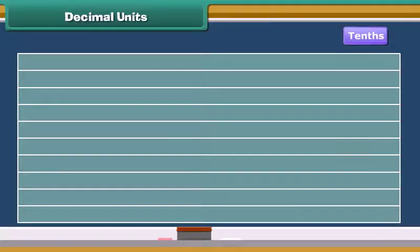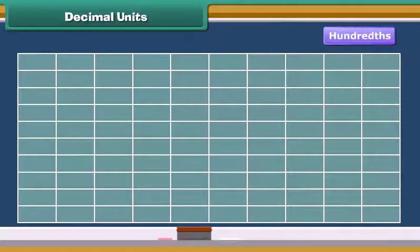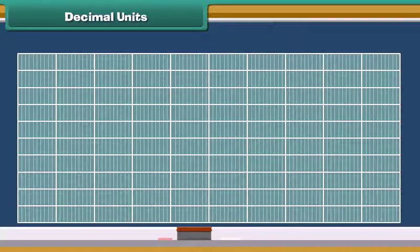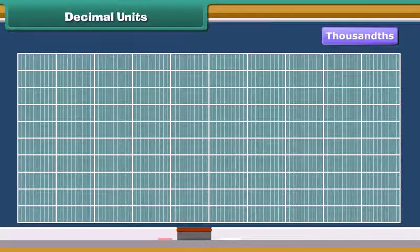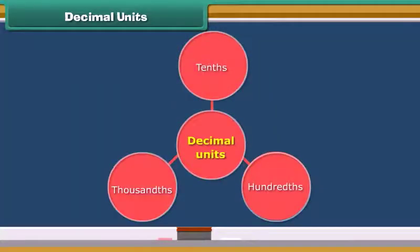Now, if we divide those rectangles into 10 smaller rectangles, then we have 10 times 10 or 100 parts of 1, that is hundredths. Dividing those rectangles into 10 smaller rectangles, we have 10 times 100 or 1000 parts of 1, that is thousandths. So, the fractions tenths, hundredths, thousandths are called decimal units.